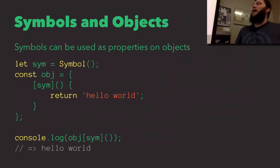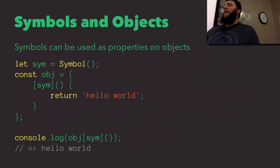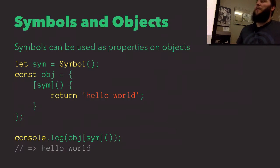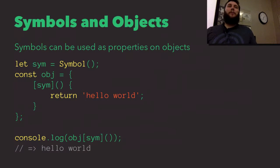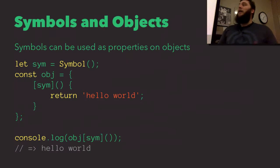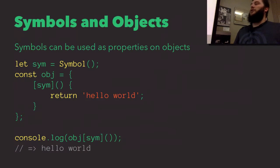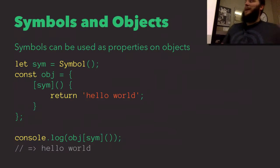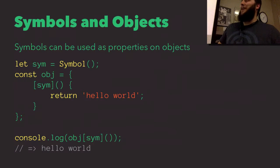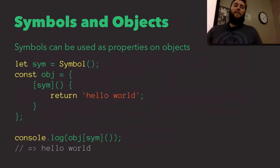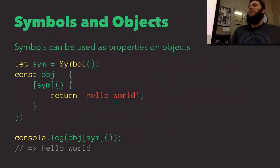Symbols work really well as properties on objects. We can add a method that has a completely unique name, and the only way to access it is by having a reference to that symbol — otherwise we'll never be able to access it, since we can never create a new symbol that matches, unless it's in the symbol registry via Symbol.for. In this case I have an object with a method that returns 'hello world', accessible only through that symbol reference.